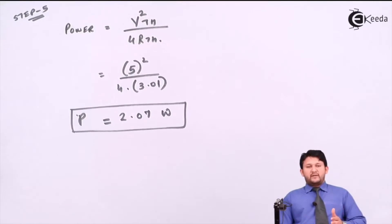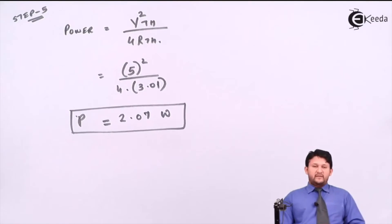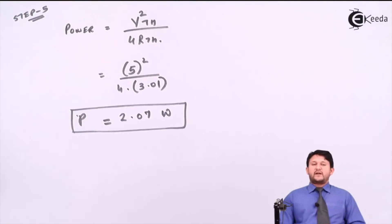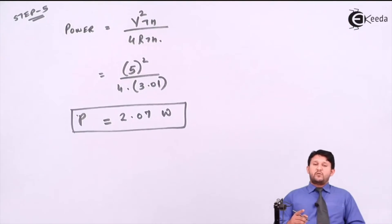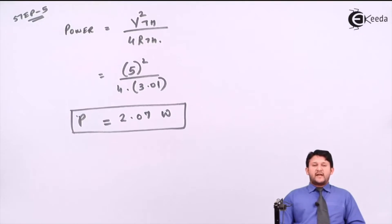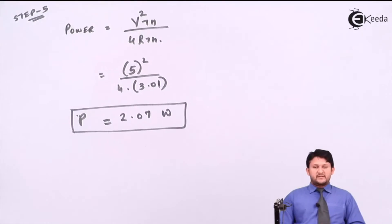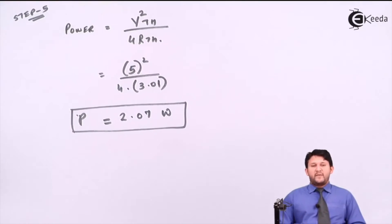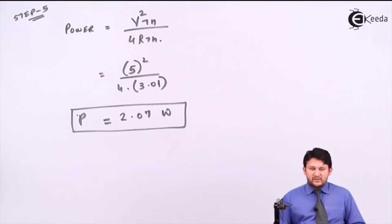The difference in Maximum Power Theorem apart from Thevenin and Norton is that the initial three steps are the same as Thevenin and Norton. Only the last two steps need special attention: RL equals your calculated equivalent resistance, and the final step is to find the power because the theorem itself is about maximum power. At the end you find the power, which gives 2.07 watts.